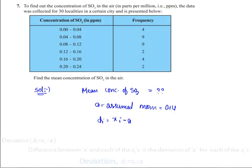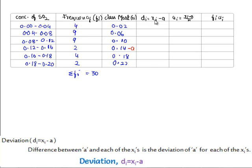As we shall calculate di, di = xi minus a, means 0.02 minus 0.14 is -0.12, and 0.06 minus 0.14 is -0.08. Here is -0.08.